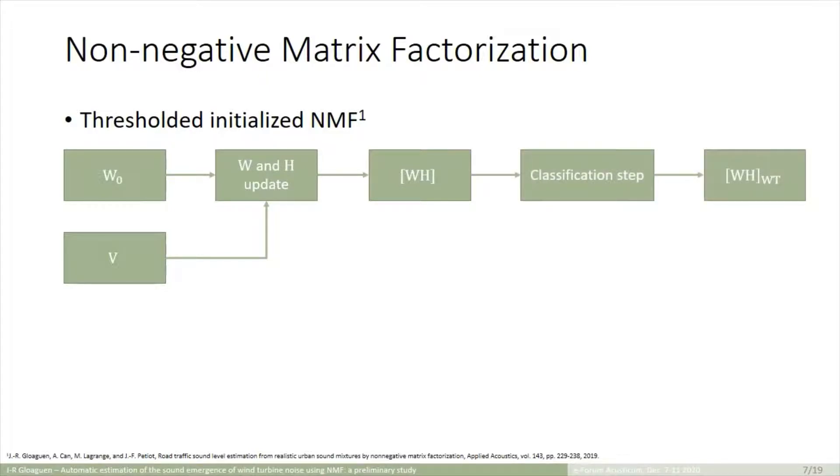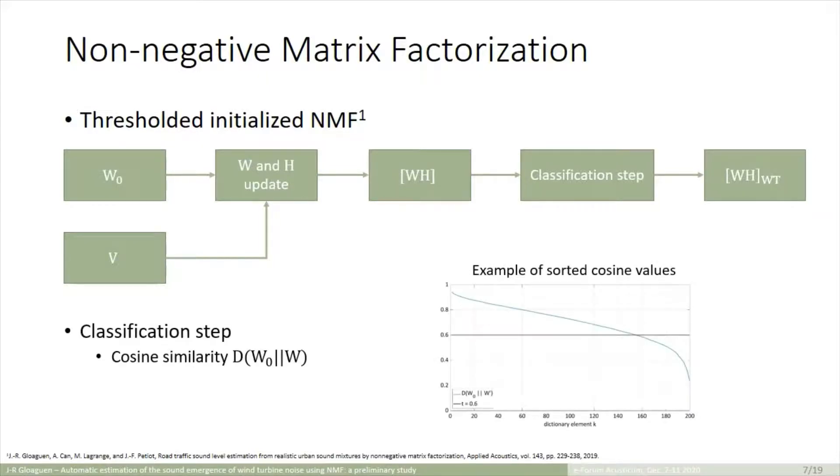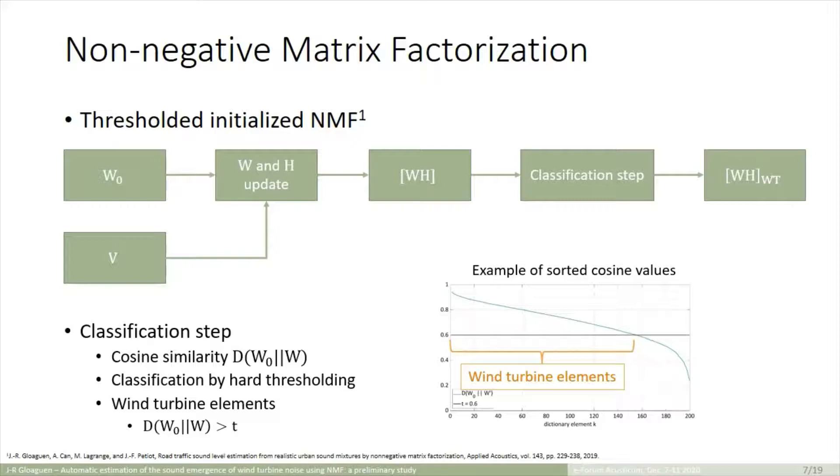Then, after all the iterations, we have a classification step on W and H, in order to extract only the wind turbine elements, because some initial elements in the update may have been modified and may describe other sound sources. And this classification is done by computing the cosine similarity between the initial dictionary, W0, and the final dictionary, W. This indicator generates a value between 0 and 1, 1 for a perfect similarity between the two elements, and 0 means a very strong diversity, the vectors are orthogonal. Then we define the wind turbine elements as the elements which have a cosine similarity superior to a threshold.